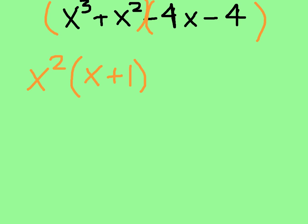Then I'm going to factor out my GCF from my second binomial. If you remember what happened in my last example, I had two matching binomials. So my goal here is to get x plus 1 to be left inside this set of parentheses, so it matches my first set. In order for me to get x plus 1 here, I need to factor out a negative 4. To double check: negative 4 times x gives negative 4x, and negative 4 times 1 gives negative 4. So that tells me I correctly factored out the greatest common factor, which is negative 4.